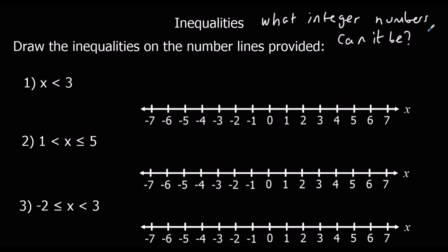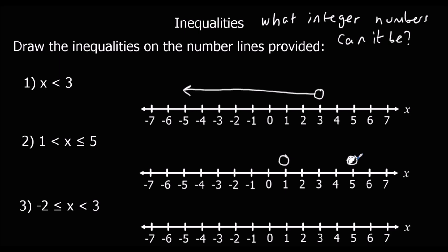The first one: x is less than 3, so we draw a circle at 3, we don't colour it in because it can't equal it, and the arrow goes in that direction. For number 2, it's bigger than 1 and less than or equal to 5, so we colour in the 5 because it can equal 5, we don't colour in 1 because it can't equal it, and we join them up for a line.